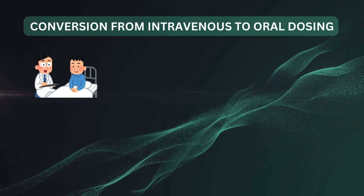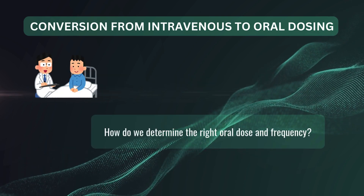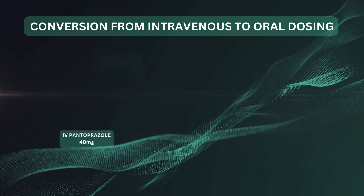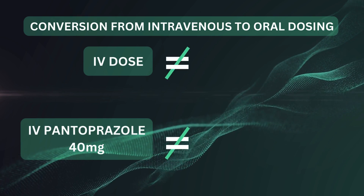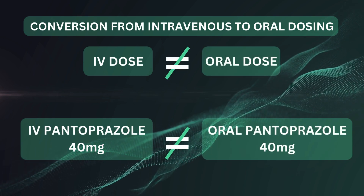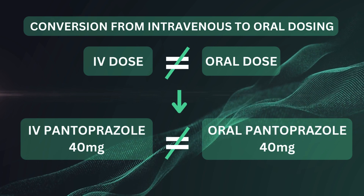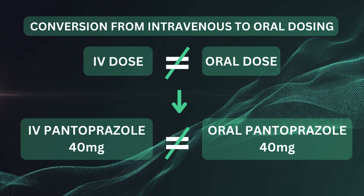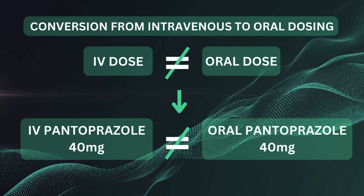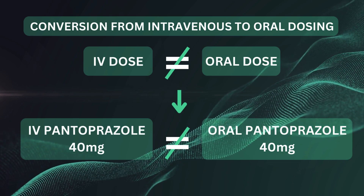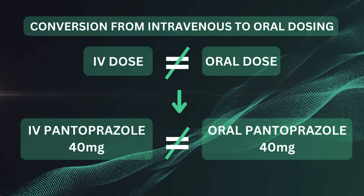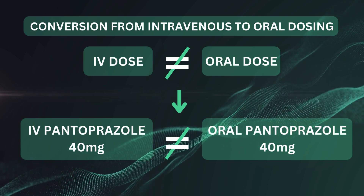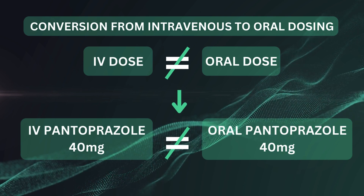But here's the main challenge: how do we determine the right oral dose and frequency? Let me clarify an important concept. 40 mg of pantoprazole IV is not the same as 40 mg of pantoprazole given orally. When a drug is given intravenously, it directly enters the bloodstream and is immediately 100% bioavailable. On the other hand, when you take the same drug orally, it passes through the gastrointestinal tract and the liver — a process called first-pass metabolism — which reduces the amount of drug that actually reaches the bloodstream.